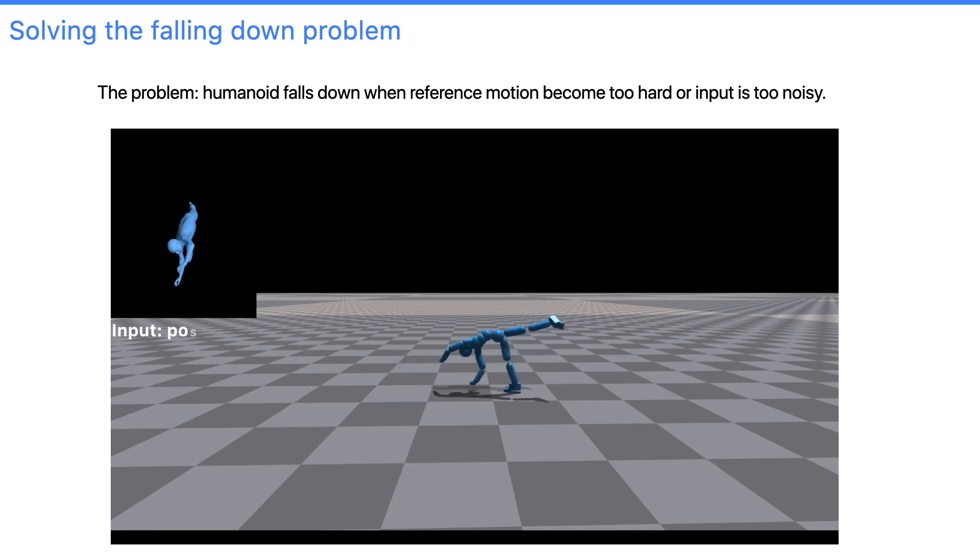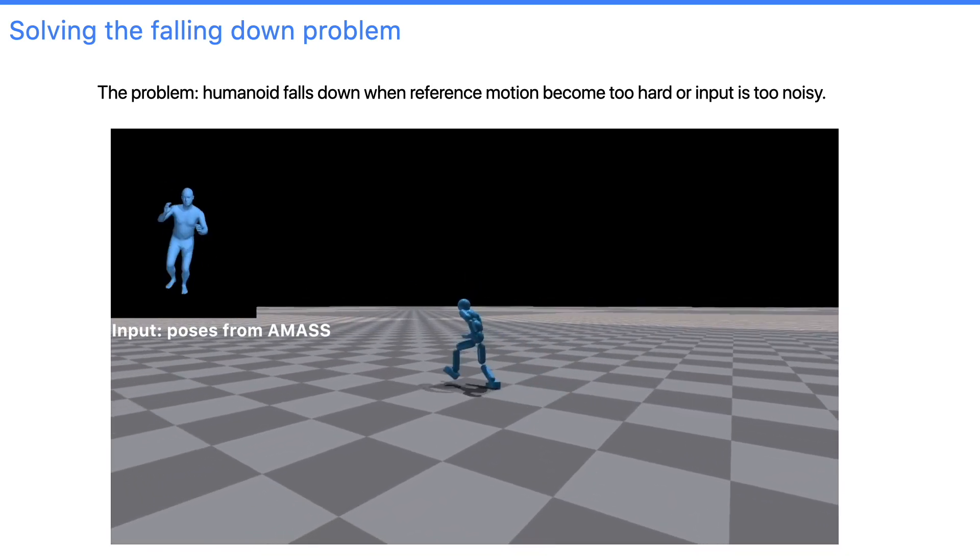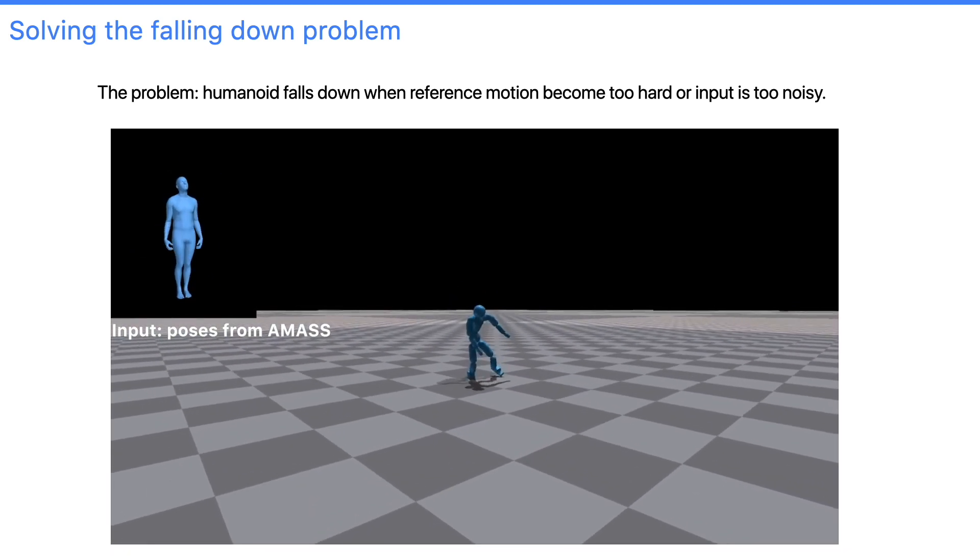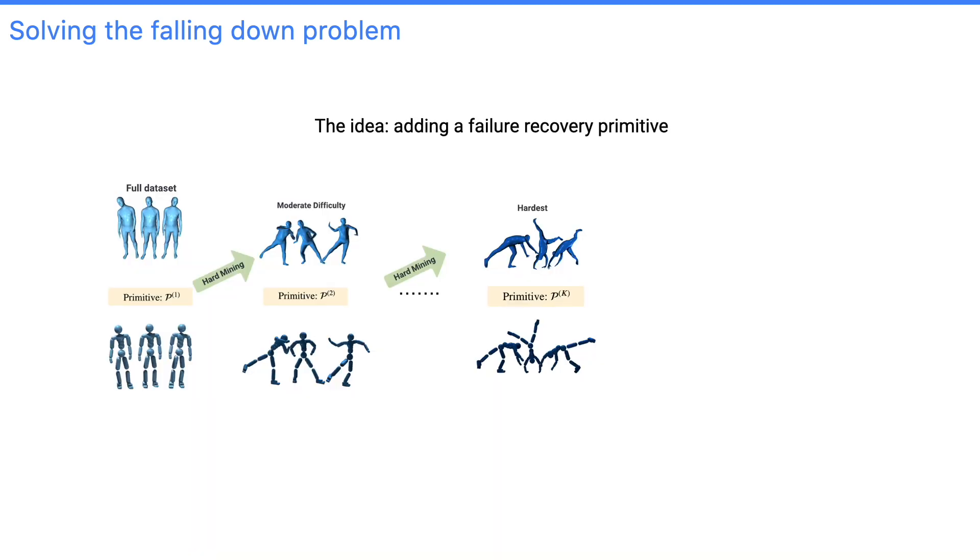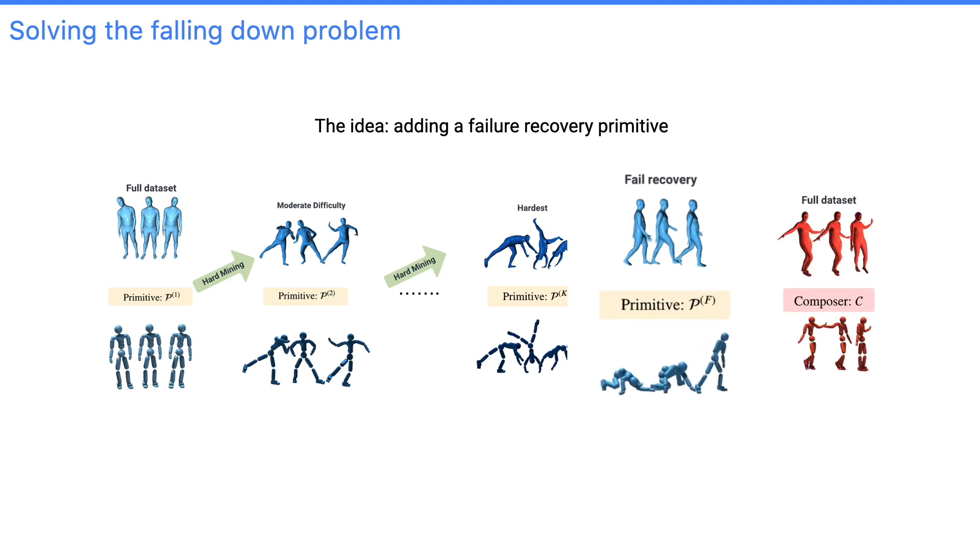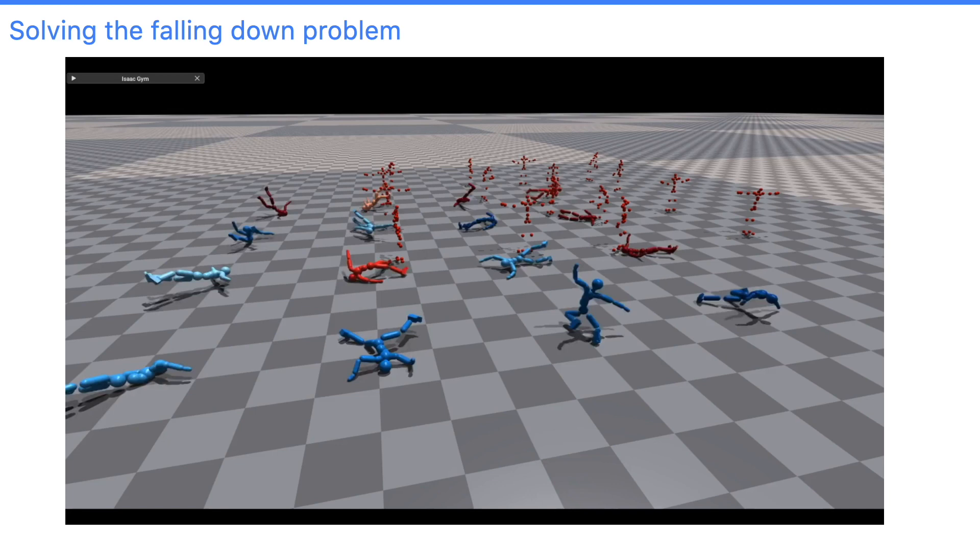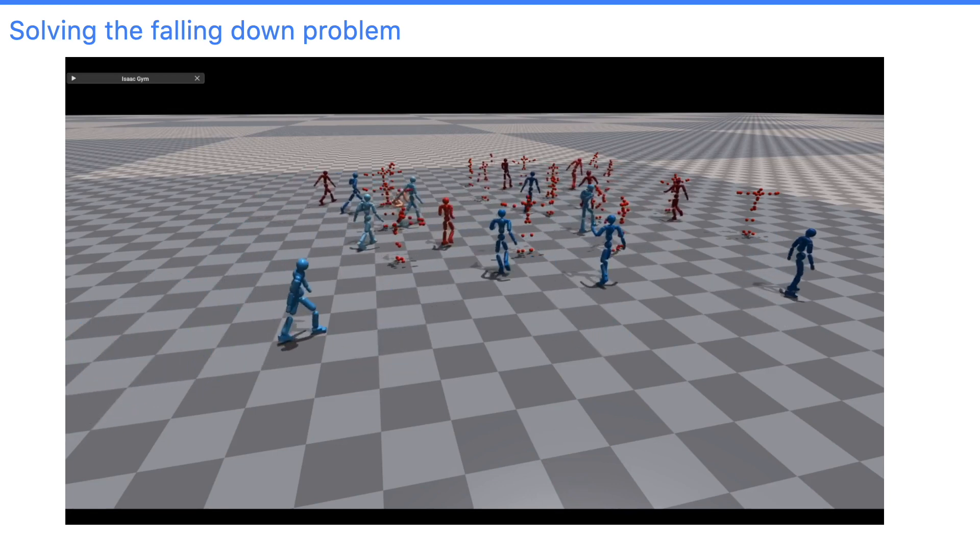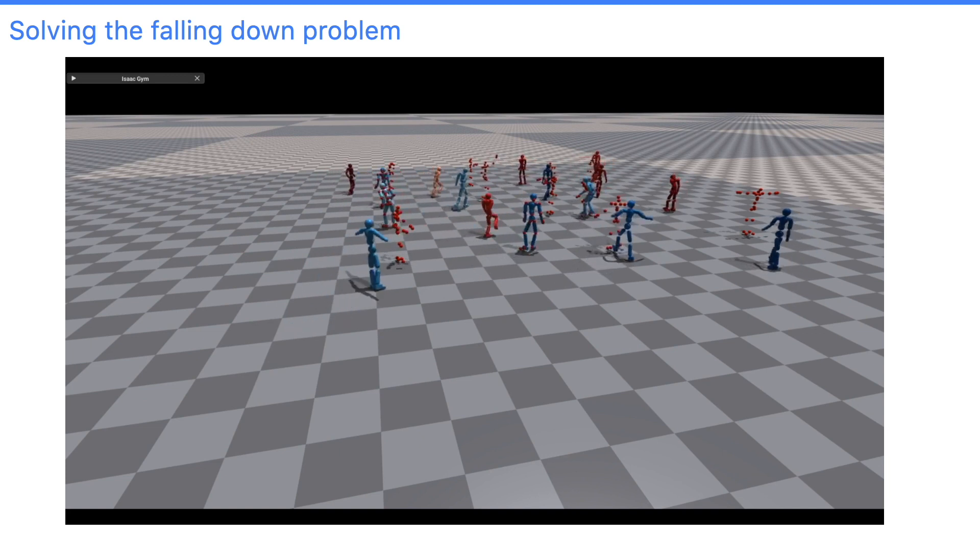Now that we have solved the generalization problem, the humanoid can still fall down when the input motion becomes too noisy or too hard. This is also easy in the current framework. We can just add a fail state recovery module. This module will learn to get up from the ground, walk back to the reference motion, and resume motion imitation.